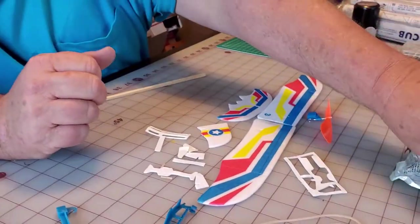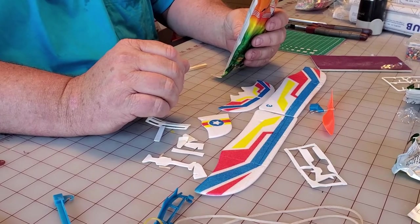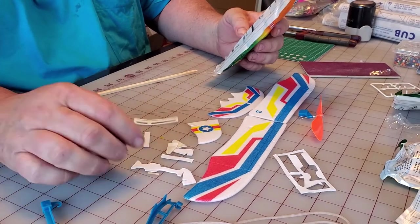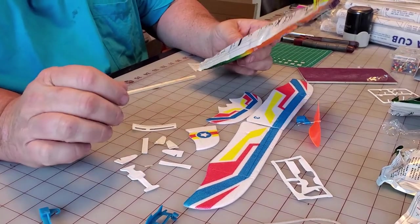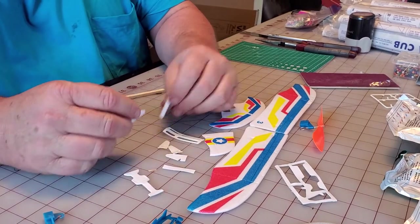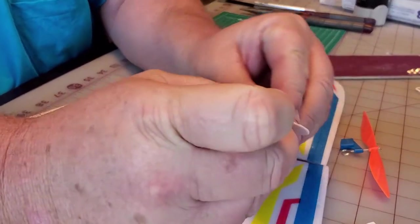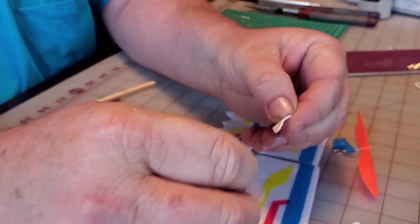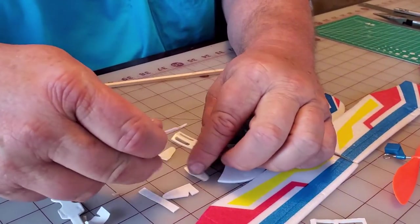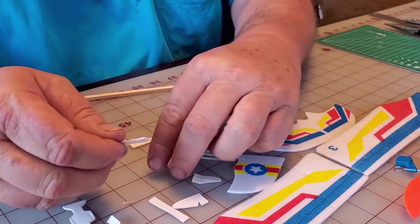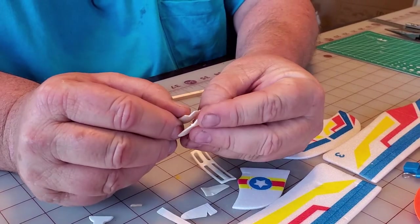So now we got instructions here on the back of the plane. The first thing it wants you to do is put these little things on the wings. I'm trying to get this two-sided tape off of these pieces. This side here is going to fit right here on this piece.